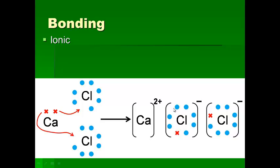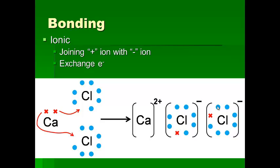They're just trying to fill their octets to become stable. This compound is CaCl2 — calcium has given away two electrons so it becomes a positive two charge, and chlorine becomes negative one because it gained one electron. Essentially, an ionic bond is the joining of a positive ion with a negative ion where they exchange electrons — the metal gives the non-metal an electron. Pause if you need to.